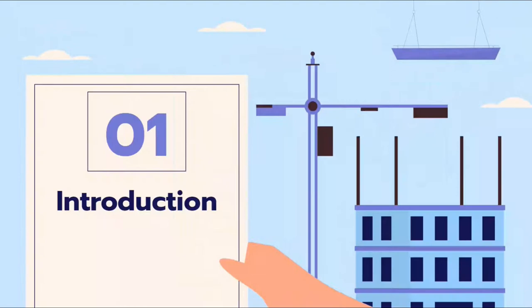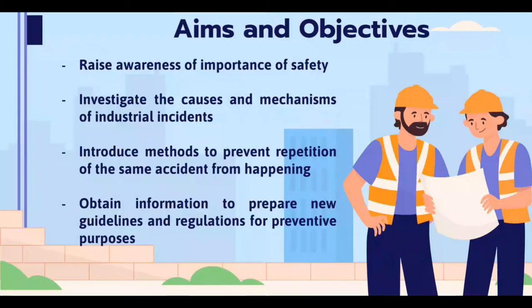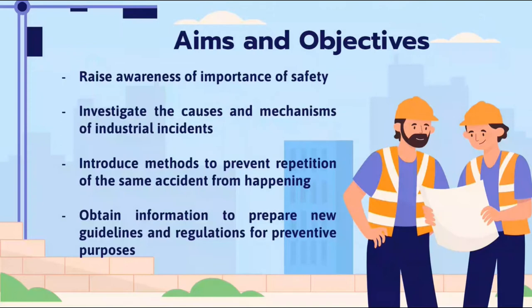The first section is introduction — aims and objectives. The aim and objective is to raise awareness of the importance of safety, to investigate the causes and mechanisms of industrial incidents, to introduce methods to prevent repetition of the same accident, as well as to obtain information to prepare new guidelines and regulations for preventive purposes.